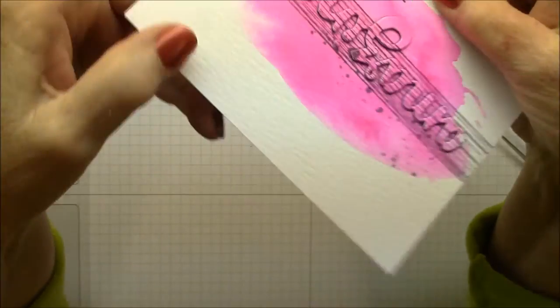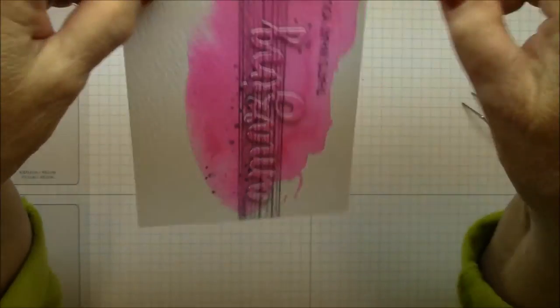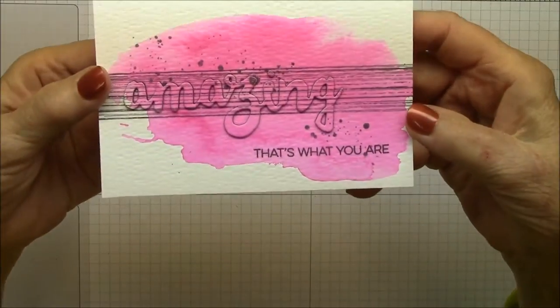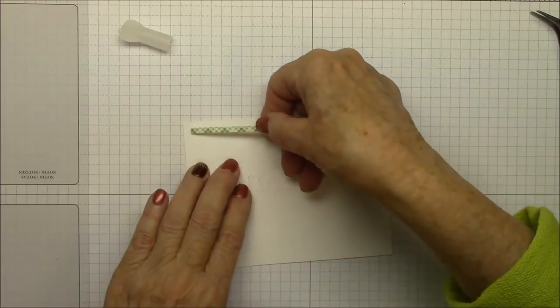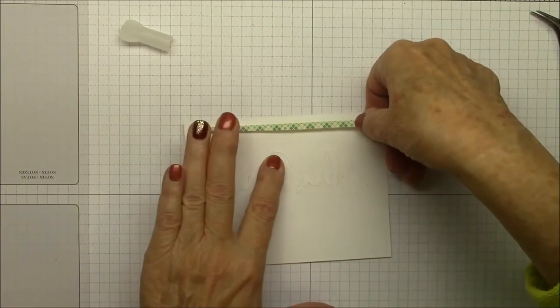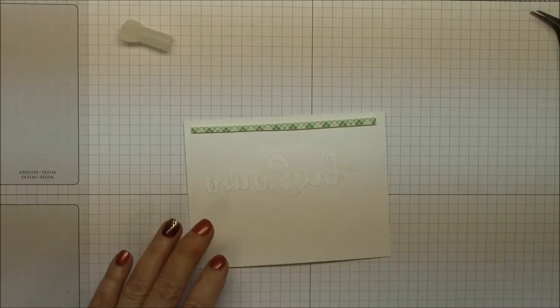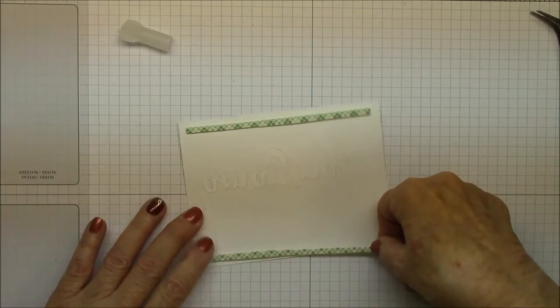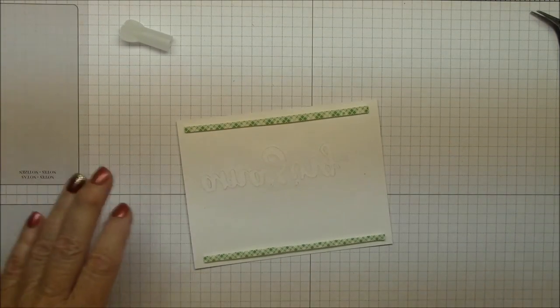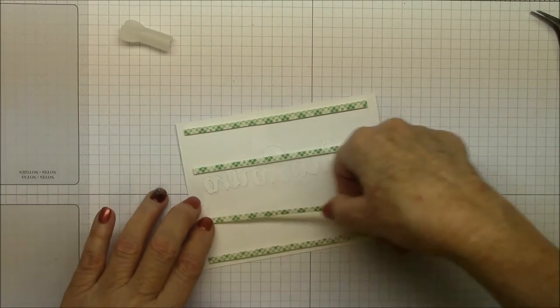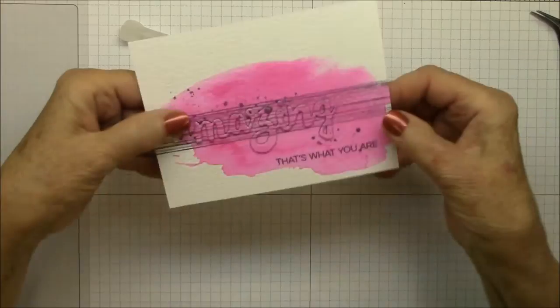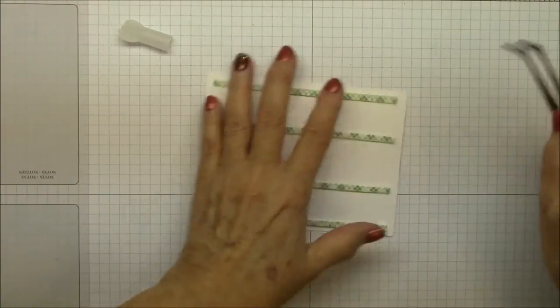Now you see how the card is warped a little bit? That was from the water coloring. And I'm going to show you how to fix that. It's not a problem at all. So I'm going to be mounting this with dimensional tape onto a card base. Now, when I do that, to straighten the card out, I'll put down one end and then I'll pull slightly on the tape before I put it down on the other end. And that will flatten that card right out.